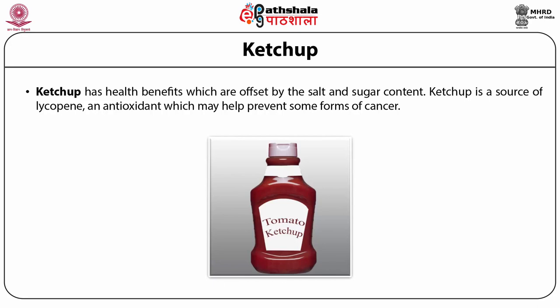Ketchup has health benefits which are offset by the salt and sugar content. Ketchup is a source of lycopene, an antioxidant which may help prevent some forms of cancer. Nutritional value per 100g includes energy 100 kilocalories or 419 kilojoules, water 68.33g, protein 1.74g, fats 0.49g, carbohydrates 25.78g, sodium 1110 mg, vitamin C 15.1 mg, lycopene 17 mg.